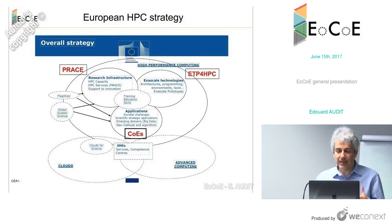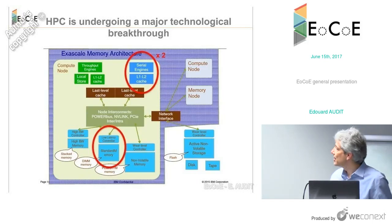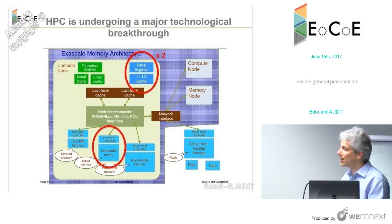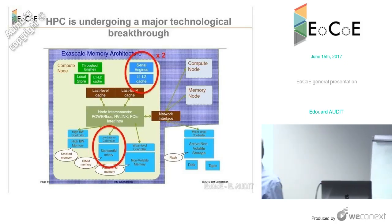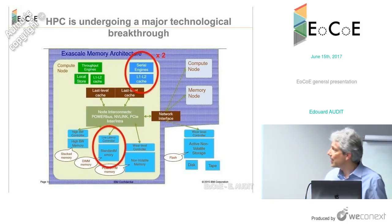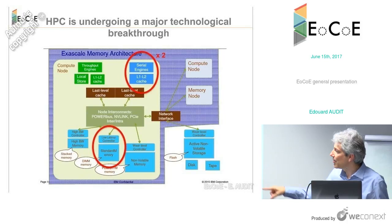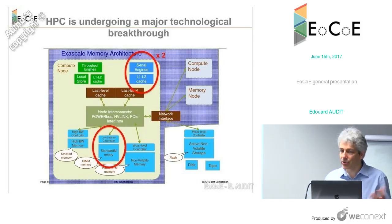For the general context, ECO is really at the crossroad of two major revolutions. The first is the hardware and the exascale revolution in HPC. Here is a sketch of what could eventually be an exascale node — a single node of which our computer will be composed of several thousand. At the center is an interconnect for the node, with a dedicated high-throughput engine, GPU or other things, a serial engine, and a very complex memory hierarchy with high bandwidth memory, low latency memory, and non-volatile memory.